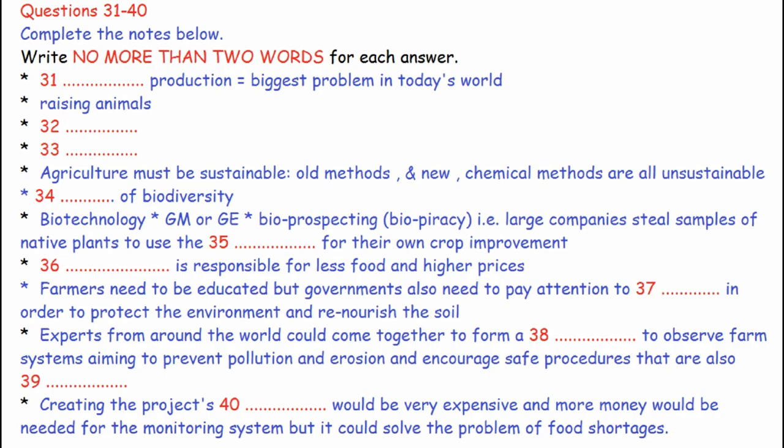In fact, I'd like to see teams of agriculture and environment experts making up a global network, which would monitor the world's farming systems. Different farming systems should be studied not only with a view to analyzing the environmental effects, but the social and economic effects as well. The studies would be carried out with a view to stemming pollution and erosion and promoting safe, cost-effective practices that will guarantee a secure food supply in the future. Monitoring sites would need to be set up all across the world and data collected in a systematic way. Of course, building the online infrastructure for such a project would cost millions of dollars, and there would be ongoing costs involved with the monitoring system, but the information gathered would go a long way towards solving the problem of feeding the masses and ensuring millions of people don't face a hungry future. That is the end of Section 4. You now have half a minute to check your answers.